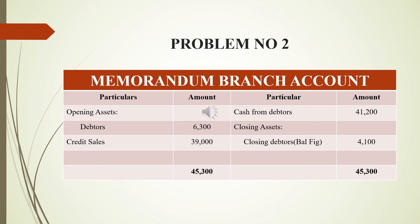Cash received from debtors is on the credit side, which is 41,200 rupees. As the balancing figure, we will get 4,100 rupees, which is the closing debtors.